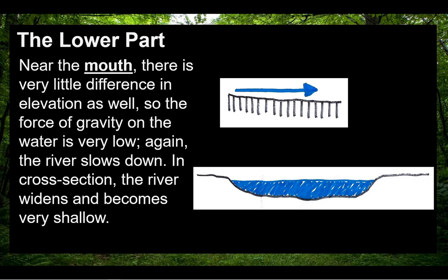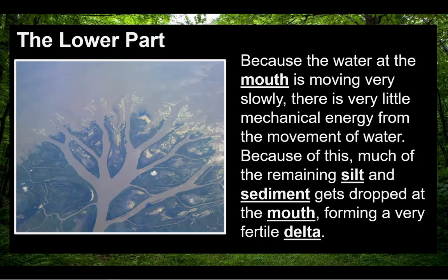In cross section, the river widens and becomes very shallow. Because the water at the mouth is moving very slowly, there is very little mechanical energy from the movement of water. Because of this, much of the remaining silt and sediment gets dropped at the mouth, forming a very fertile delta.